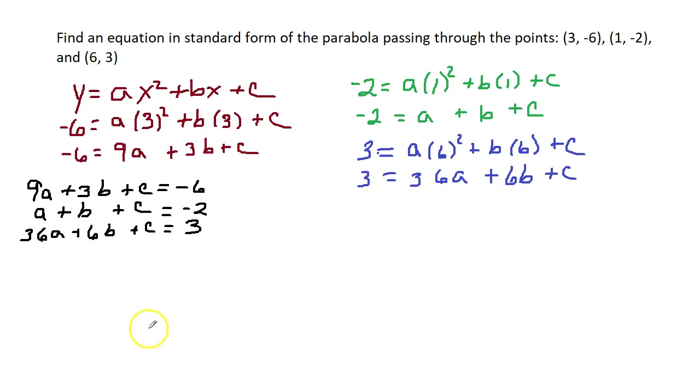Now, here's our system of equations. I am going to do an elimination. What I'm going to do is take negative 1 times the second equation and add it to each of the other two. So, negative 1 times the second equation gives me negative a minus b minus c equals 2. I'm going to add this to the first equation.